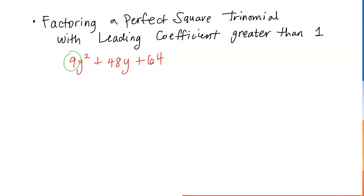The first term is 9y squared, right? You notice how I can make 9y squared by 3y times 3y. 3y times 3y is 9y squared. So yes, that's good.